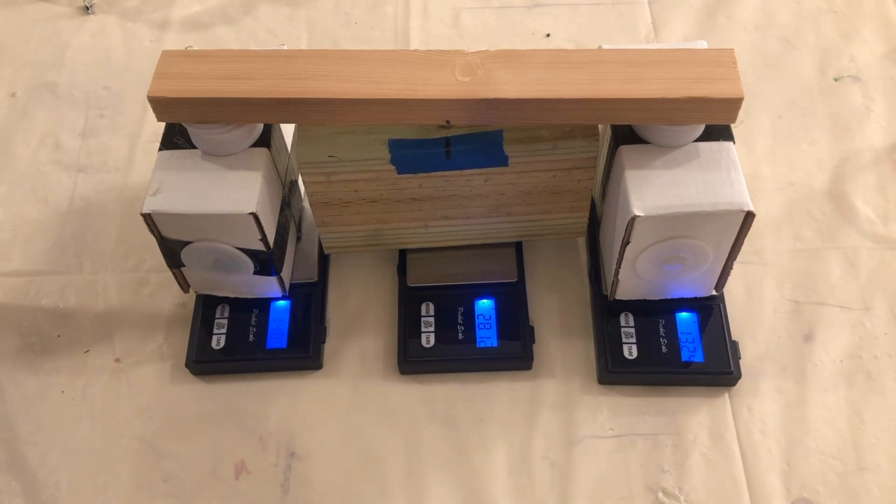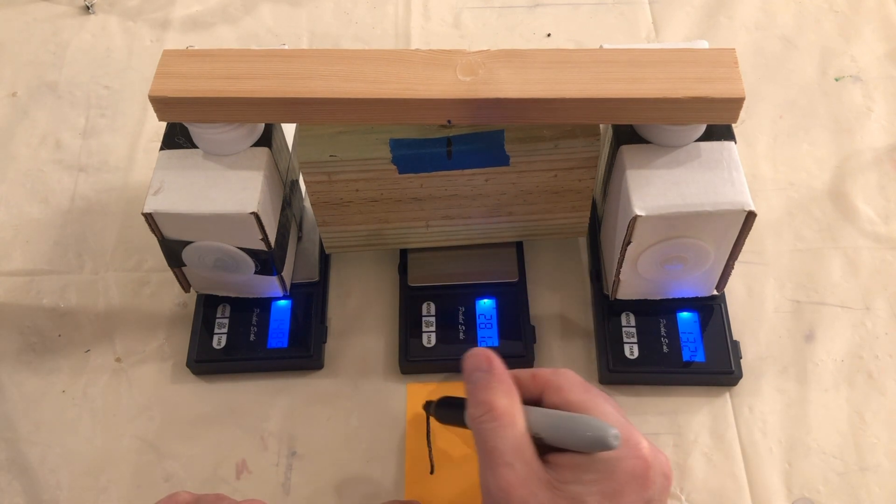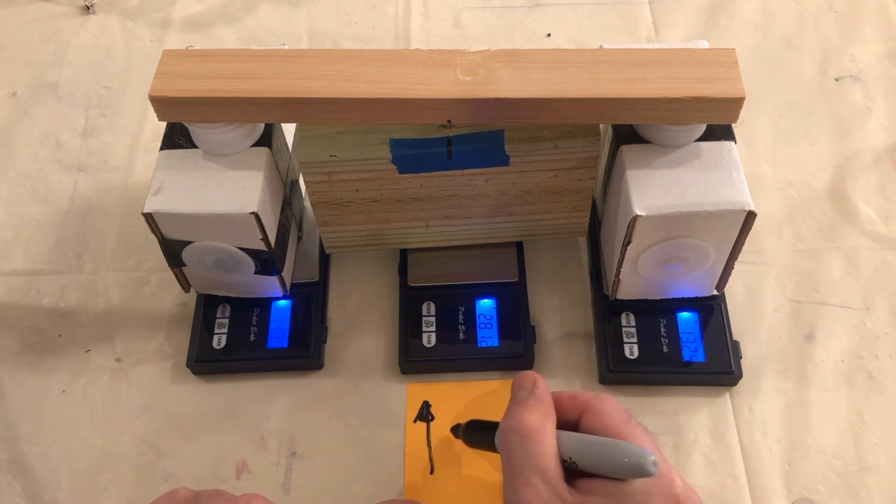Let's record the forces that are reported on each scale. The middle scale has a negative number reported which indicates an upward force on the system.